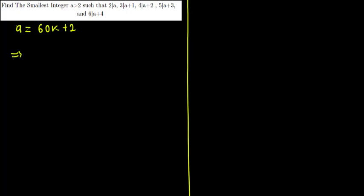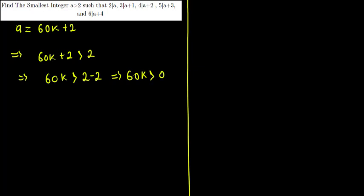This implies 60k must be greater than 0, so k must be greater than 0. Since k is an integer, the smallest valid value is k equals 1, which gives the smallest integer a.